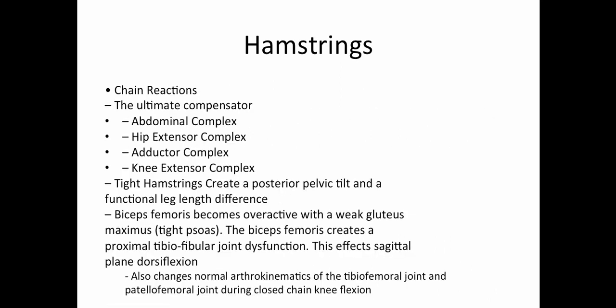Chain reactions of the hamstrings: the hamstrings are known as the ultimate compensator — they can compensate for the abdominal complex, the hip extensor complex, the adductor complex, or the knee extensor complex. A short or tight hamstring creates a posterior pelvic tilt and a functional leg length difference. The biceps femoris becomes overactive when the gluteus maximus is weak or the psoas is tight, creating a proximal tib-fib joint dysfunction that affects sagittal plane dorsiflexion. This can also change the normal arthrokinematics of the tibiofemoral and patellofemoral joints during closed chain knee flexion.